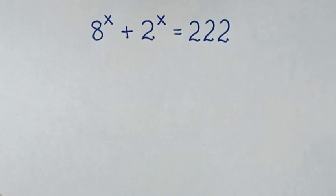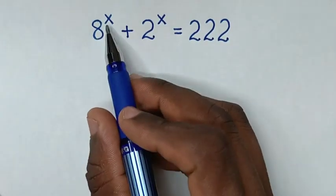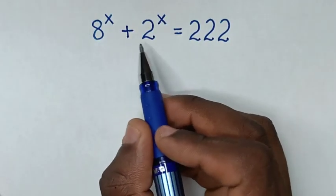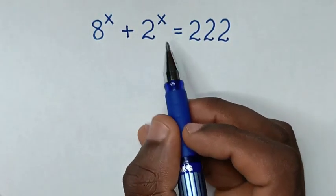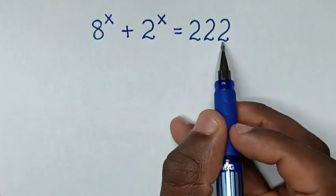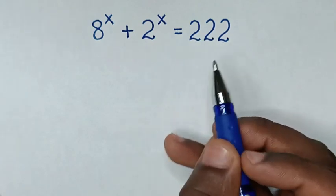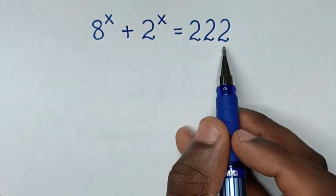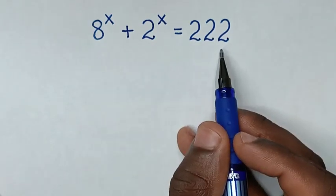Hello! How to solve 8 to the power x plus 2 to the power x is equal to 222? We find the value of x from this equation.